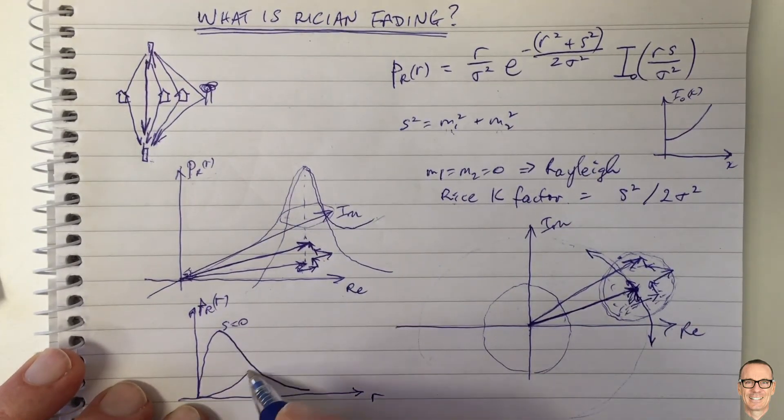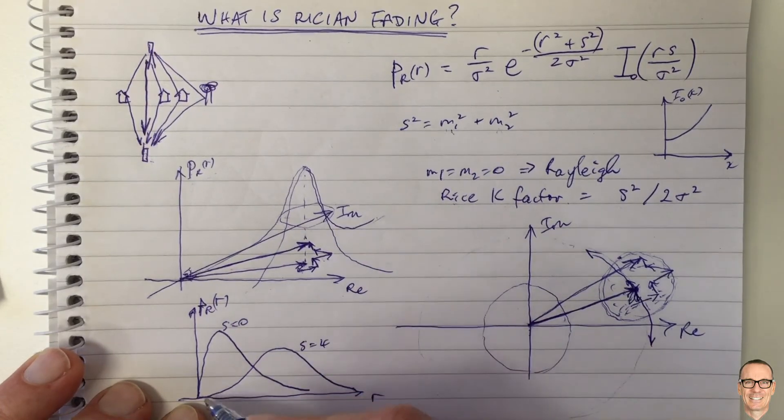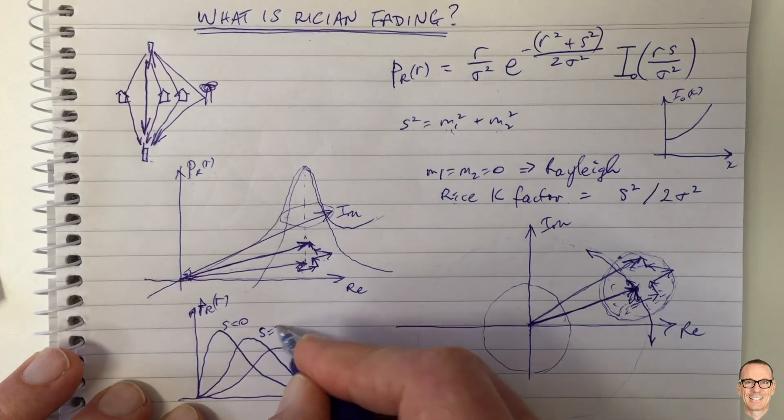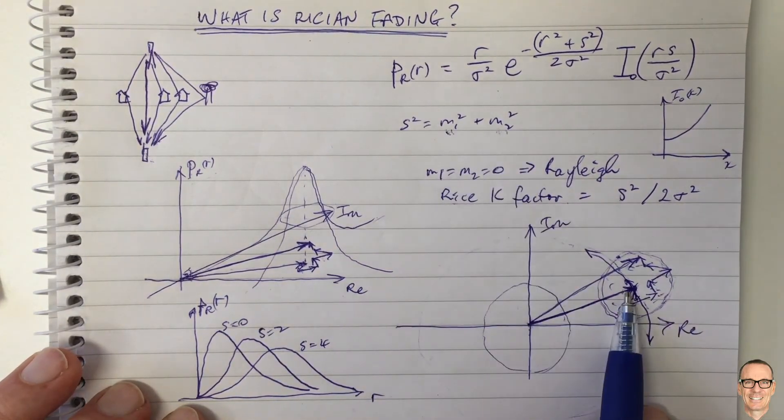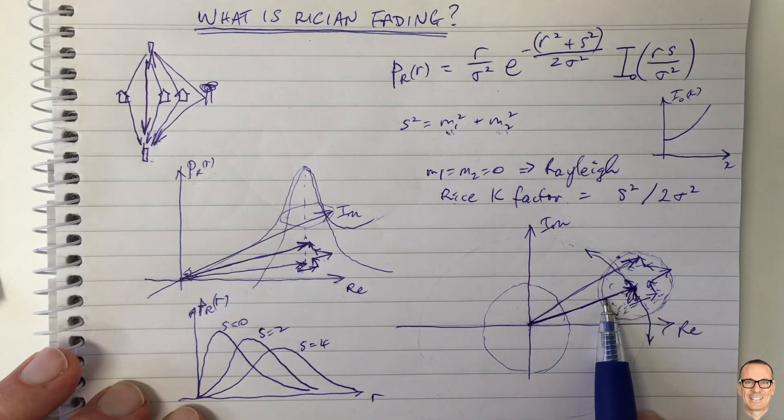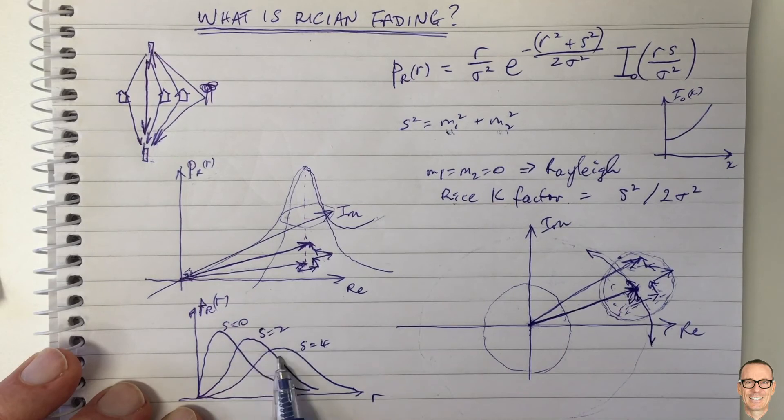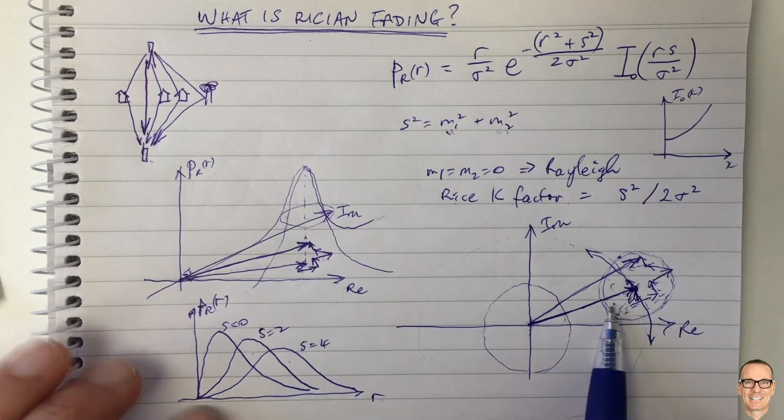And as s equals bigger values, it spreads out. So this is s equals four, for example. S equals two. And so this is the effect of having the mean value of your dominant path being further away or closer means that you have different curves here of your Rician distribution for amplitude. And as I said, the phase